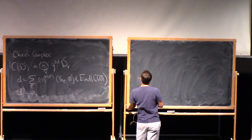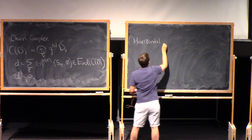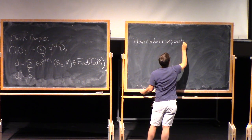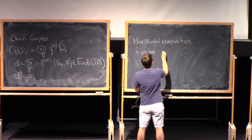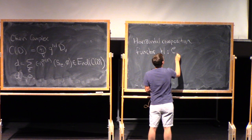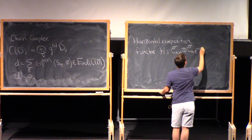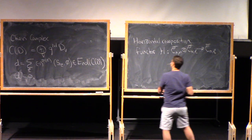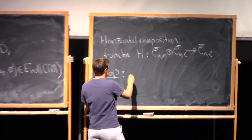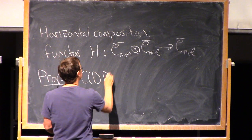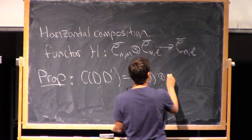One thing that I'd like to point out, which is still formal but useful, is that horizontal composition gives a functor — let me call it H for horizontal composition — from C-bar(N,M) tensor C-bar(N,L) to C-bar(N,L). The proposition, which categorifies the proposition we had last time about horizontal composition, is that if I take C of D composed with D-prime, so if I compose two tangle diagrams, I get C(D) tensor C(D-prime).